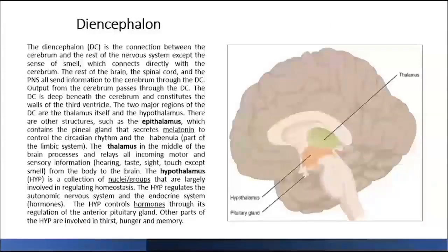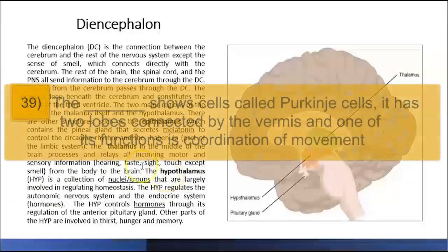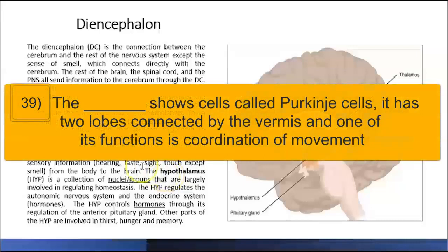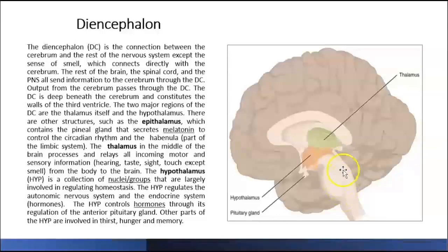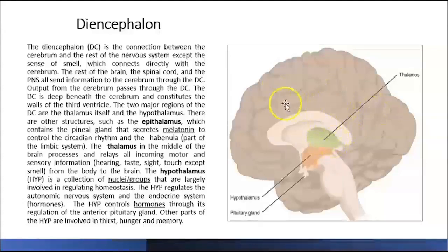The diencephalon has three parts: the thalamus, the hypothalamus, and the epithalamus. The thalamus is a group of neurons forming multiple groups, located right in the middle before information reaches the brain. It is often referred to as the gateway to the brain, because all information from the body, the ears, the eyes, the cerebellum, and the reticular formation goes through the thalamus. The thalamus processes and relays this information to different areas of the brain.